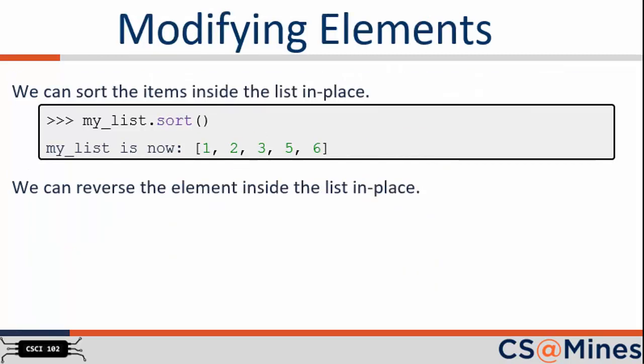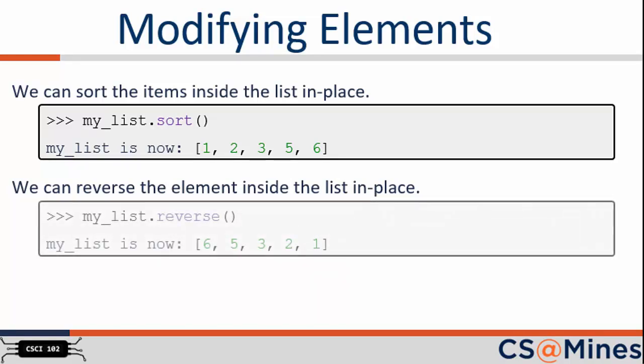There are two important modifier functions that are good to know. The first is sort, which sorts the items inside the list. As with our other functions, notice how sort is called using a dot operator with the variable myList. Lastly, we can reverse the elements in the list with the reverse function. I love how Python uses function names that make sense.